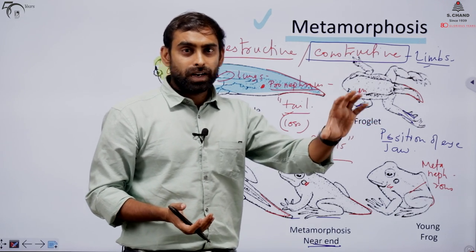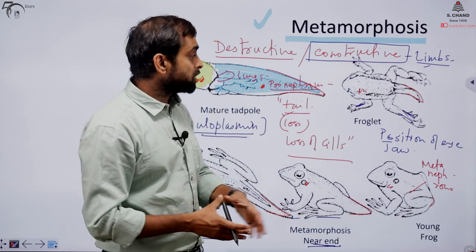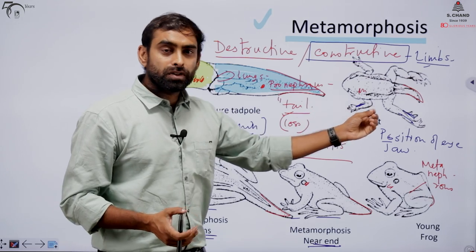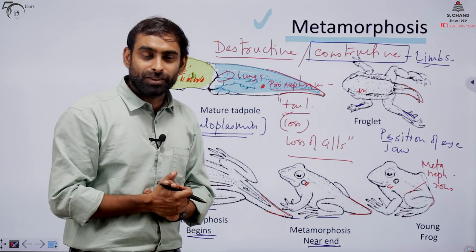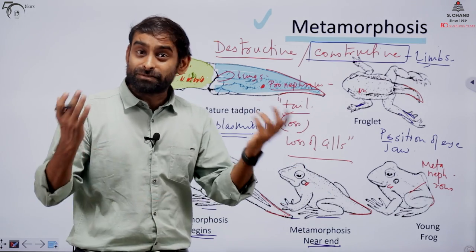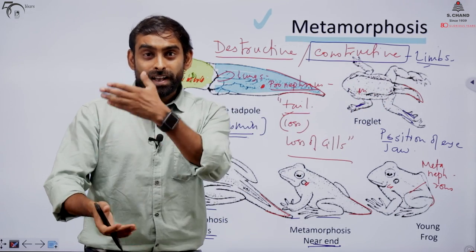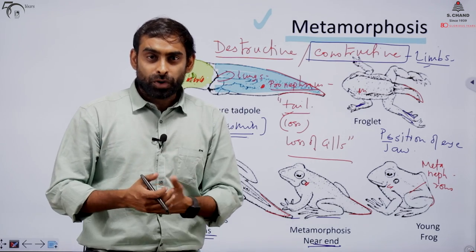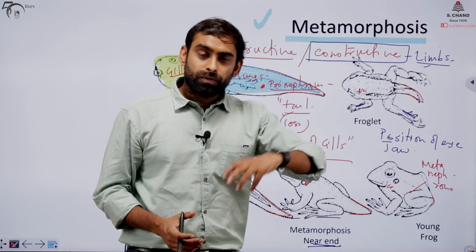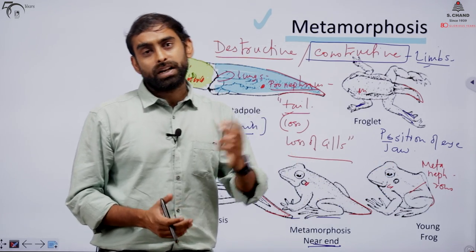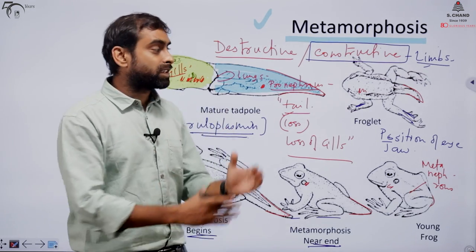So metamorphosis is an event different from embryonic development, found in only a few organisms. This is noteworthy because it gives us important lessons about change in shape. Maybe in the future, if we understand how metamorphosis works, we can artificially induce a similar process in organisms — for example, for limb regeneration — which would be of great benefit for human health, helping people whose organs don't function properly.